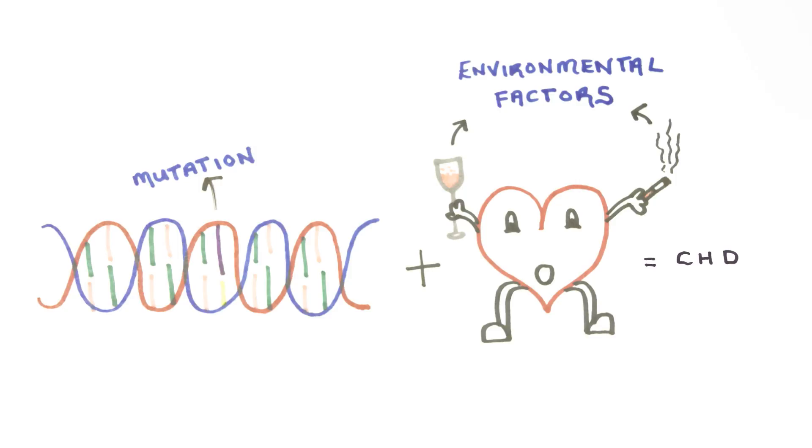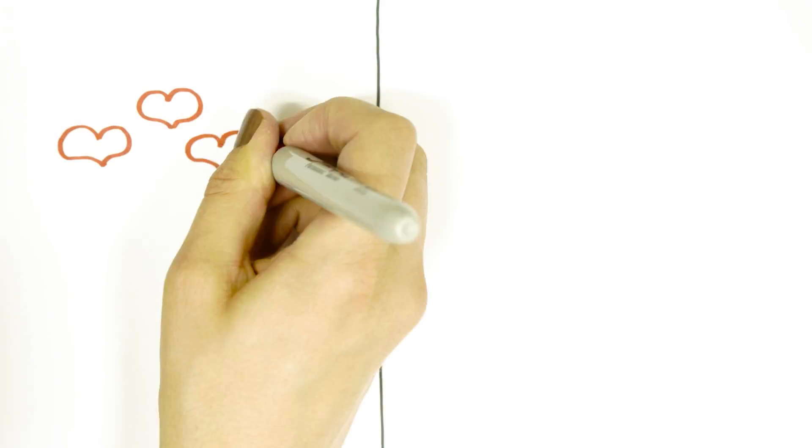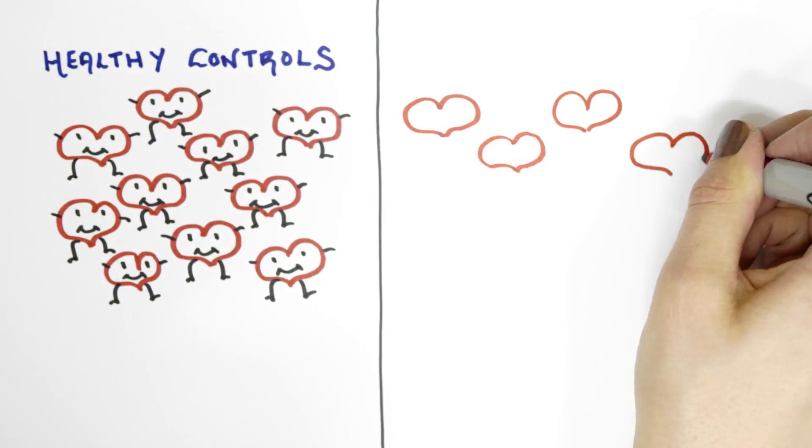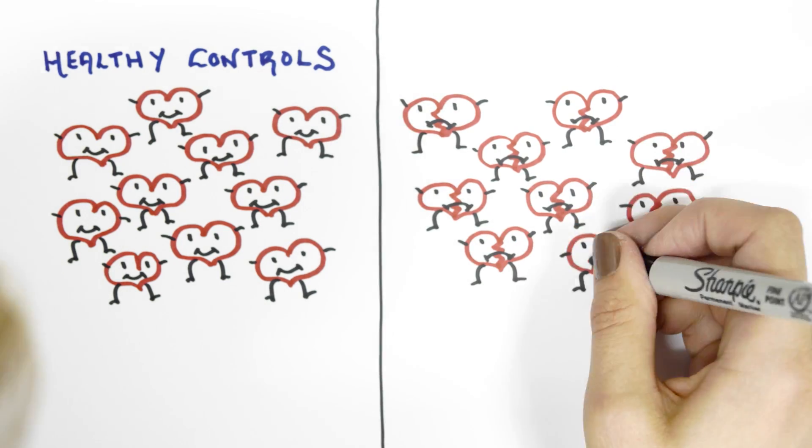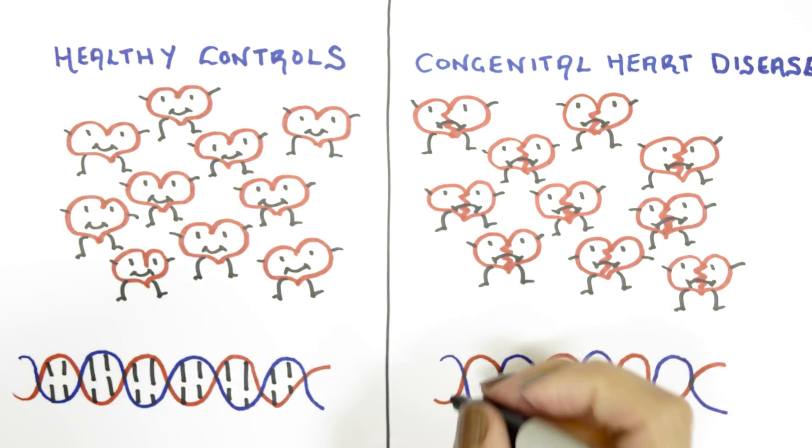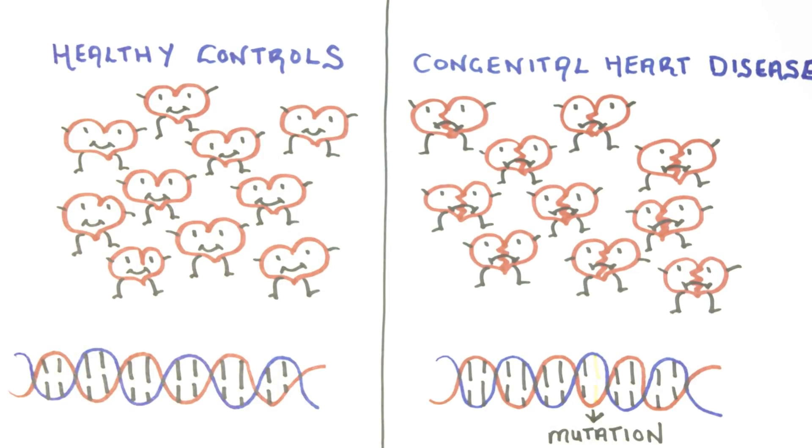To find potential causes of CHD, we've sequenced the DNA of patients with known CHD, and compared those sequences with a control population that doesn't have the disease. We look for variations in the DNA coding sequence, known as single nucleotide variants, or mutations that are unique to patients with CHD, or extremely rare in the general population.